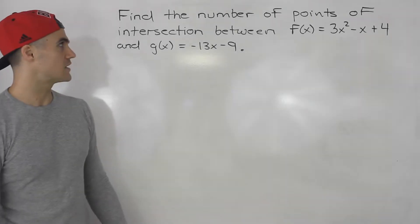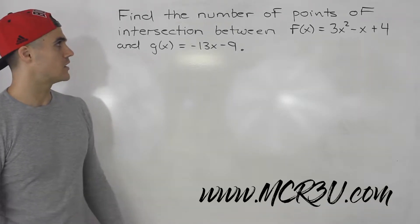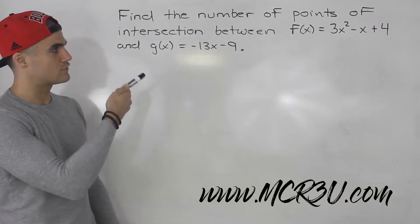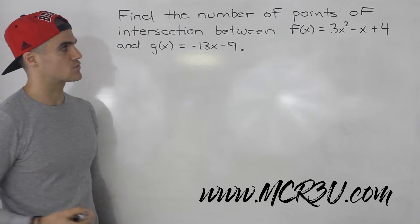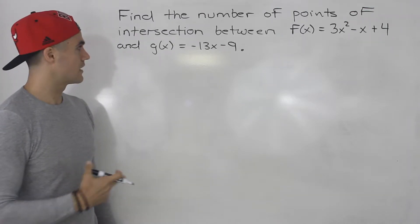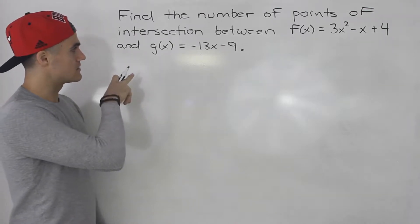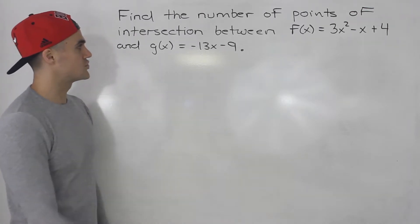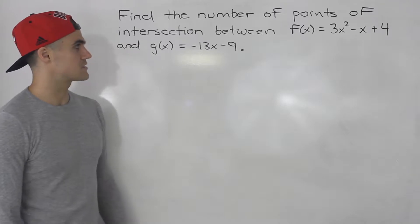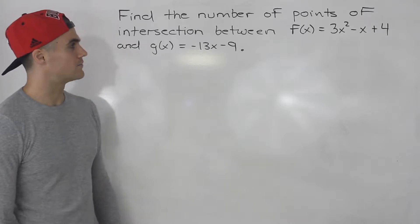Moving on to the next video, we have to find the number of points of intersection between the function 3x squared minus x plus 4 and g of x equals negative 13x minus 9.